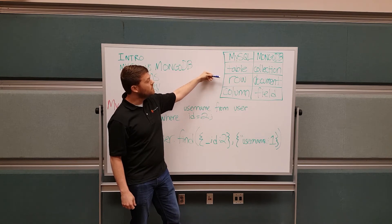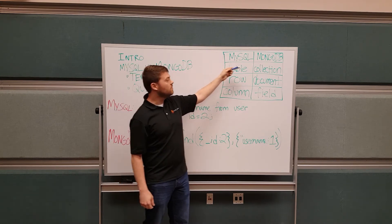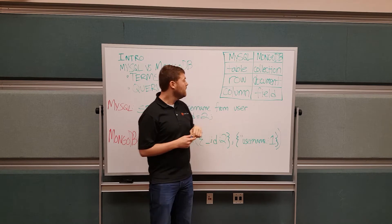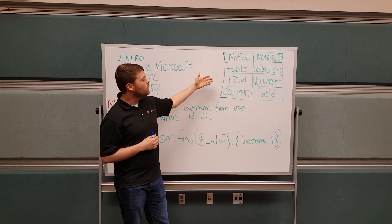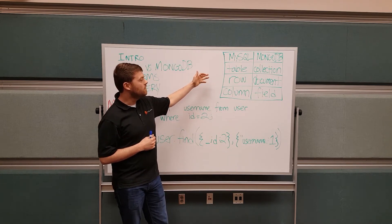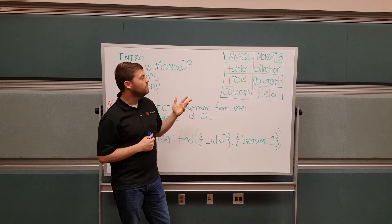Tables are built of rows in MySQL. Collections are built of documents in MongoDB. Then the difference between the row column structure in MySQL would be a document and field relationship.